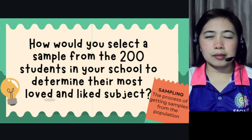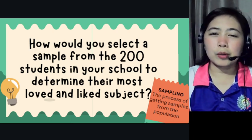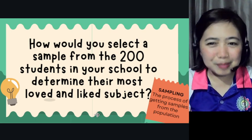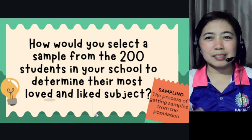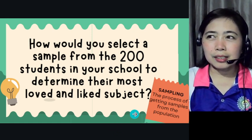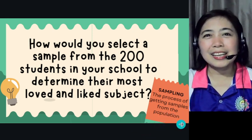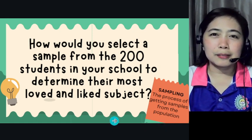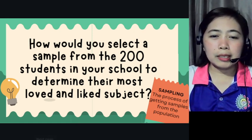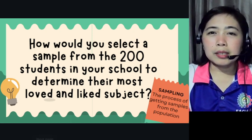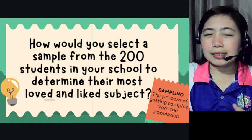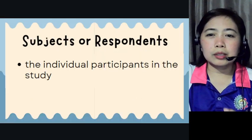How would you select a sample from 200 students in your school to determine their most loved and liked subject? Sometimes choosing a favorite subject also depends on who the teacher is. The sampling process gets samples from the population. From 200, maybe you take 100, or focus on just one strand — for example, the STEM strand — to determine their most loved or liked subject.